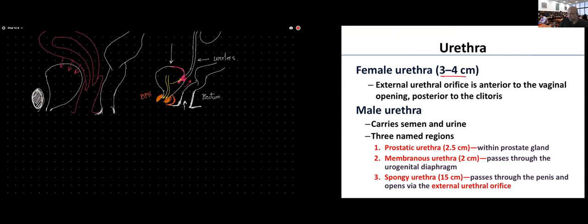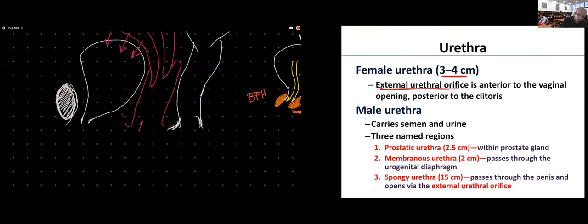The urethra is much shorter in females — about three to four centimeters. The external urethral orifice is located anterior to the vaginal opening and posterior to the clitoris, which is the erectile tissue corresponding to the male penis.